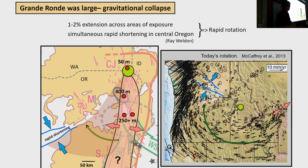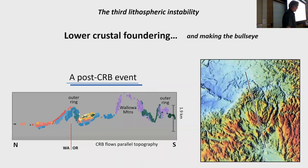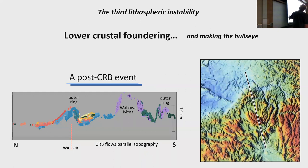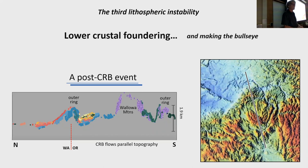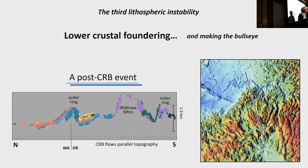The third instability is a post-CRB event. There are maybe a couple of Saddle Mountains flows — perhaps one percent or less of everything — but by and large this is after the CRB event. All the vertical motion making the bullseye and the Wallowas is after the flood basalt event. That's what got Hills interested in this: as a geomorphologist flying over the Wallowa Mountains, he asked what's all that basalt doing on top of the mountains — we lifted the mountains up.